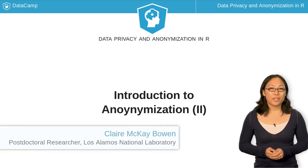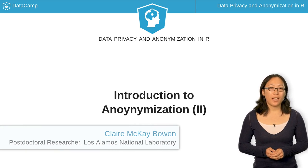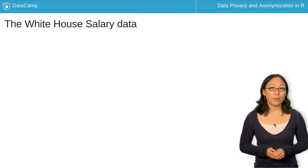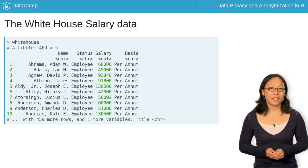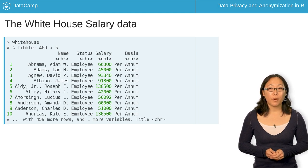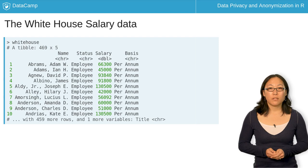In the previous lesson, you learned how to remove personally identifiable information, or PII, like the participants' names. You also learned how to manipulate the data to provide more privacy by rounding the salaries. But there are other ways you can do this.